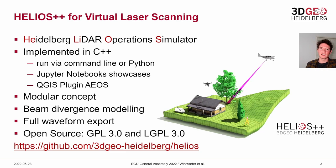Helios++ is a software that allows you to do virtual laser scanning and it's an acronym that stands for Heidelberg LIDAR Operation Simulator. It's implemented in C++ and is therefore very efficient, runs in the command line as an executable or via Python bindings. Using the Python bindings we have also created showcase notebooks using Jupyter notebooks so you can run them in your browser and see the results. There is also a plugin for the open source GIS software QGIS, called EOS.